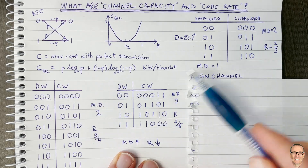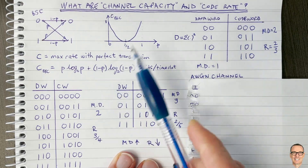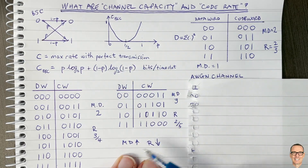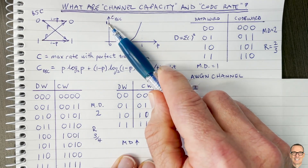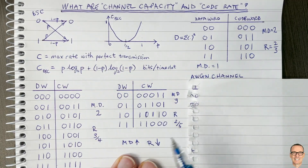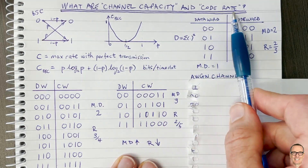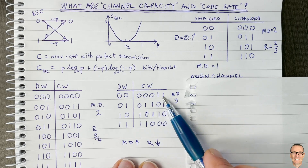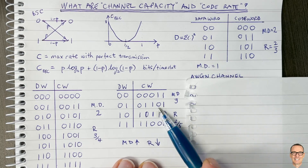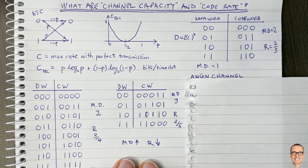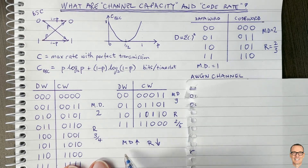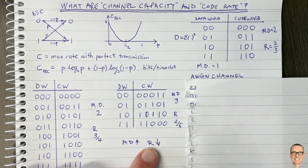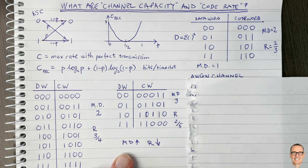The key principle is: the lower the rate, the more error correction capability we can build in. As the minimum distance goes up, we can correct more errors, and one way to increase the minimum distance is to lower the rate. This is the design challenge for code books. All three examples we've looked at are trying to approach the channel capacity. Rates are fractions — bits per channel use — less than one, because sending at rate one with errors means you can't recover them. To get towards channel capacity, you need a code rate less than one. If two errors happen simultaneously, we still can't correct them with minimum distance three.